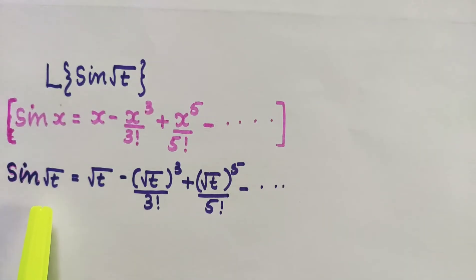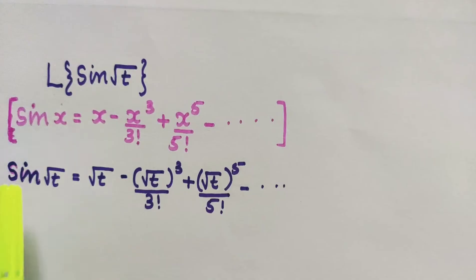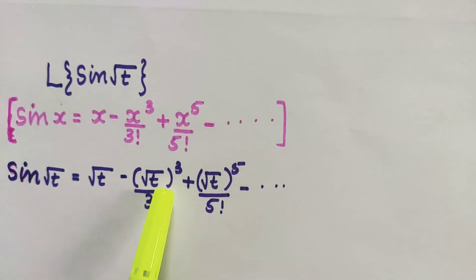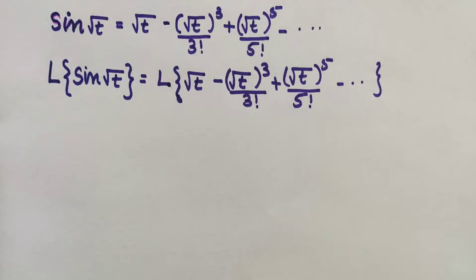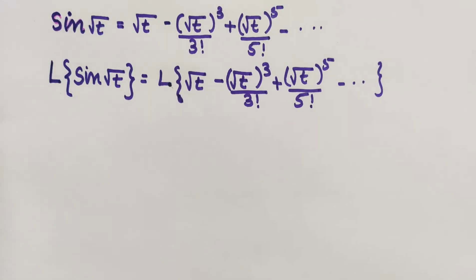sin(√t) is equal to √t − (√t)³/3! + (√t)⁵/5! and so on, where in place of x it is now √t. So we can write the Laplace transform of sin(√t) as the Laplace transform of √t − (√t)³/3! + (√t)⁵/5! and so on.